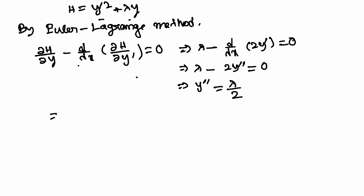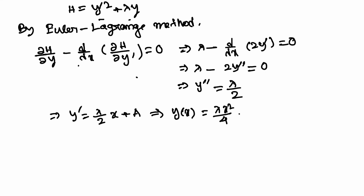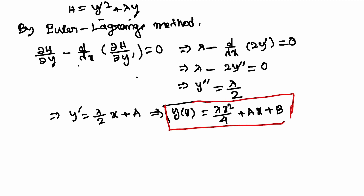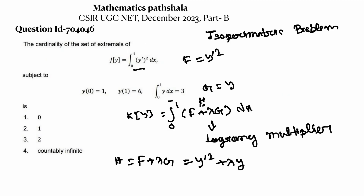Integrating both sides, we get y-dash equal to lambda over 2 times x plus a, where a is an arbitrary constant. Integrating again, we get the extremal y(x) equal to lambda x-squared over 4 plus a x plus b.